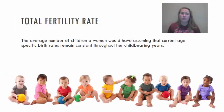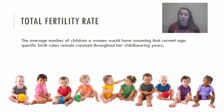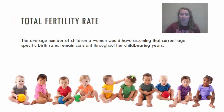We're going to define total fertility rate — this is the average number of children that a woman would have assuming that she is the average woman and the birth rates stay consistent throughout her entire childbearing years. Childbearing years range from about 16 years old all the way up to about 45 years old.